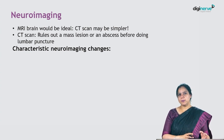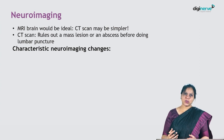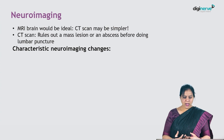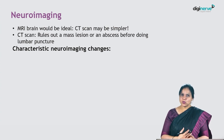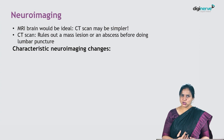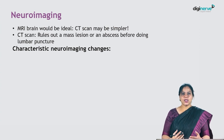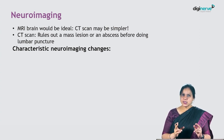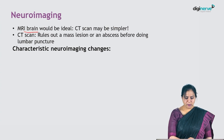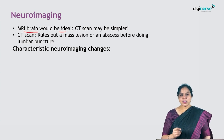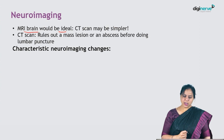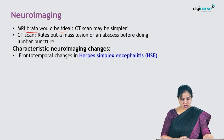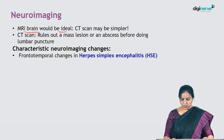For neuroimaging, prior to performing an LP you should always get a CT scan if the patient presents with neurological symptoms like seizures or focal neurological deficits. CT scan is simpler, quick, widely available, and easy to interpret, but MRI brain is the ideal neuroimaging as it gives much more information about the type of meningitis.